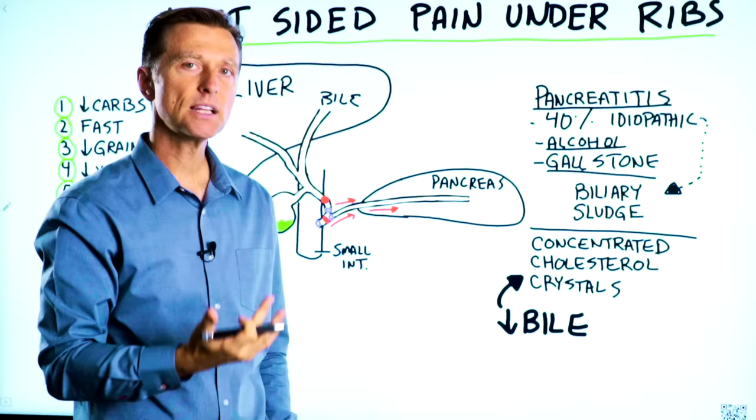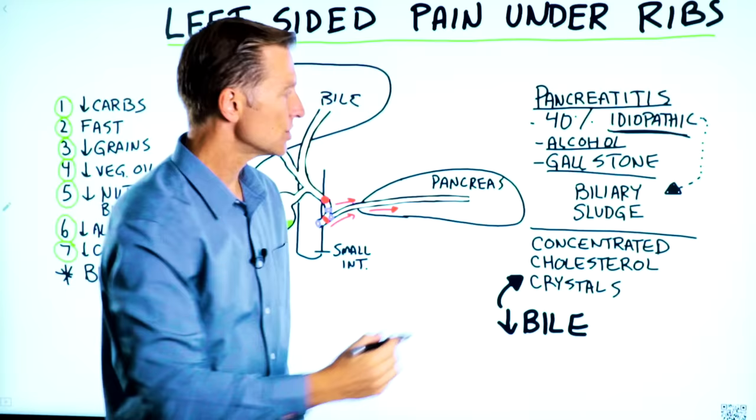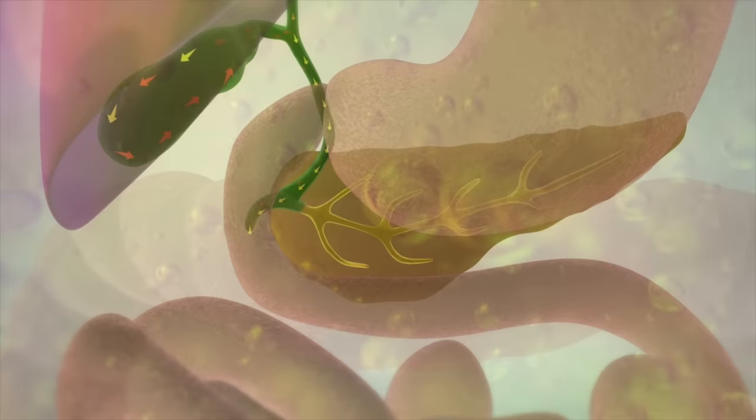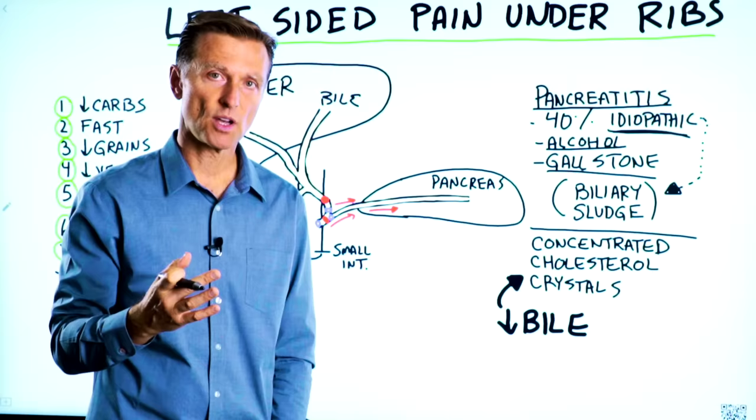Typically, pancreatitis comes from either way too much alcohol or gallstones. But up to 40% of the time, there's an idiopathic cause, and that means unknown cause. But if you look up more data on this, there's an indication that you have something called biliary sludge, which is kind of a pre-state or a pre-gallstone where you're getting this thickened bile sludge that is very hard to detect on either a CAT scan, MRI, or even ultrasound because the crystals are very, very small.